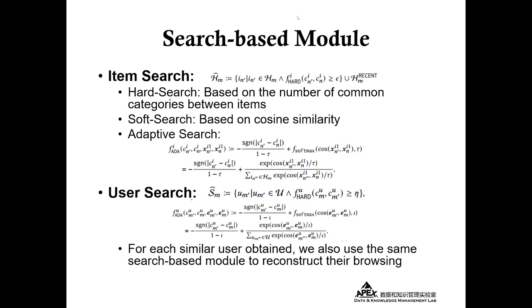The second module is the search-based module. It can be divided into the search for items and search for users, both of which have basically the same formula. First, there is the search for items. The left side of the formula is the set of items in the historical data whose relevance exceeds a threshold value. The relevance is scored in two ways: hard search and soft search. Hard search is scored by the common categories among items. Soft search calculates the cosine similarity of item embeddings. Combining the two gives us the adaptive search we actually use, where we control the weight of the two search methods by a time-variable parameter.